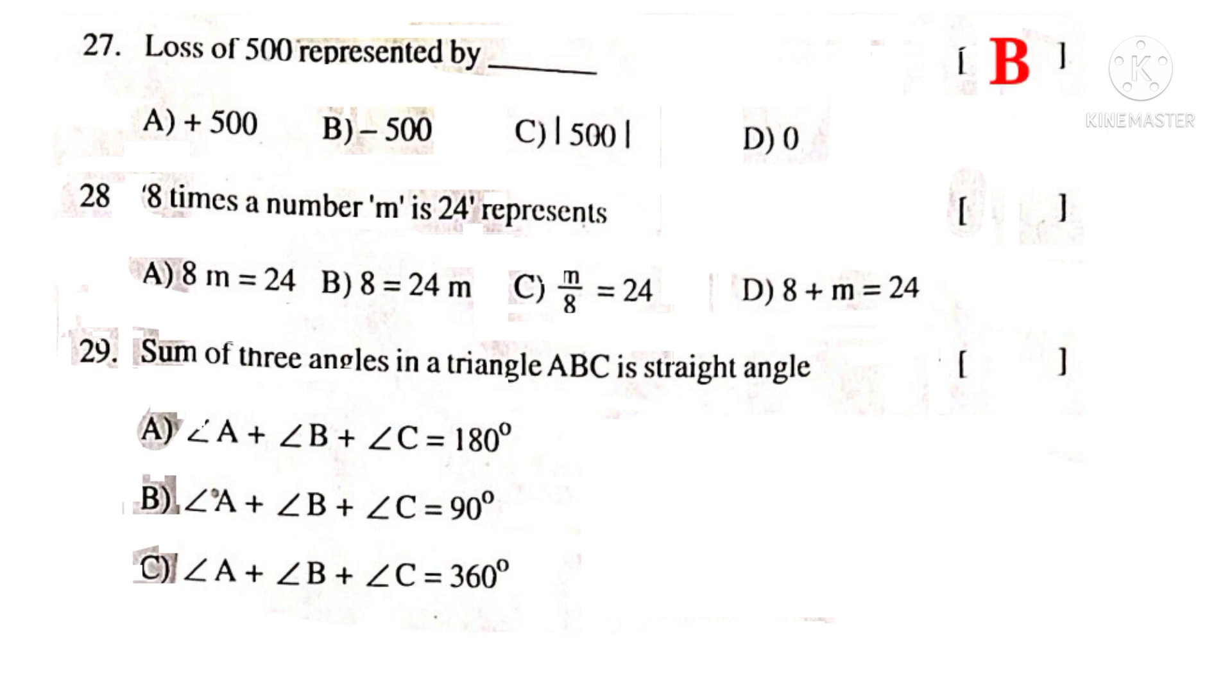8 times a number M is 24, represents. Observe the number 8, so write 8. Times indicates multiplication. We need not write into symbol. And the number M, so write the variable M. Is 24 means equal to 24. So, 8M is equal to 24 is the equation. So, the correct choice is A.